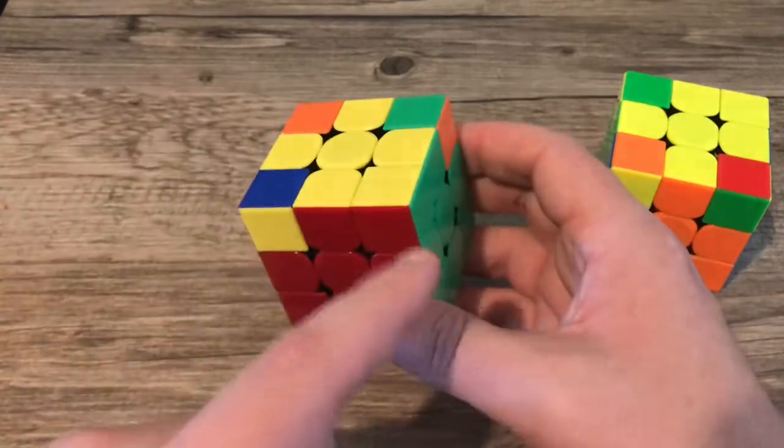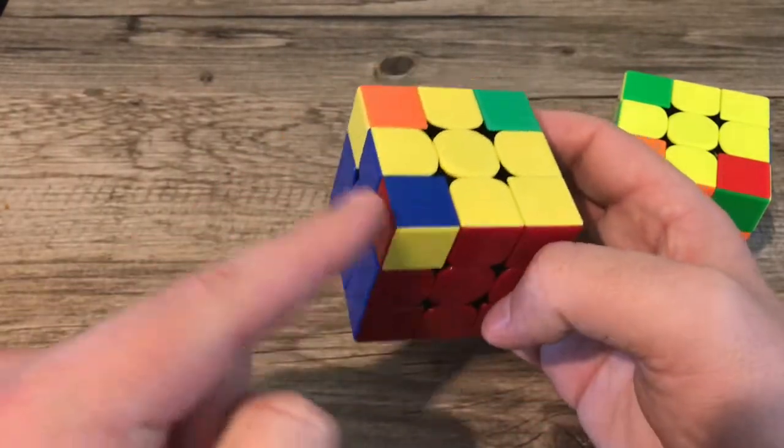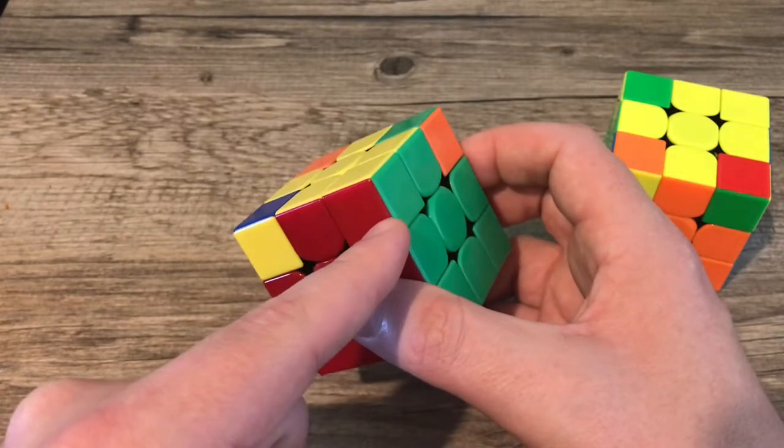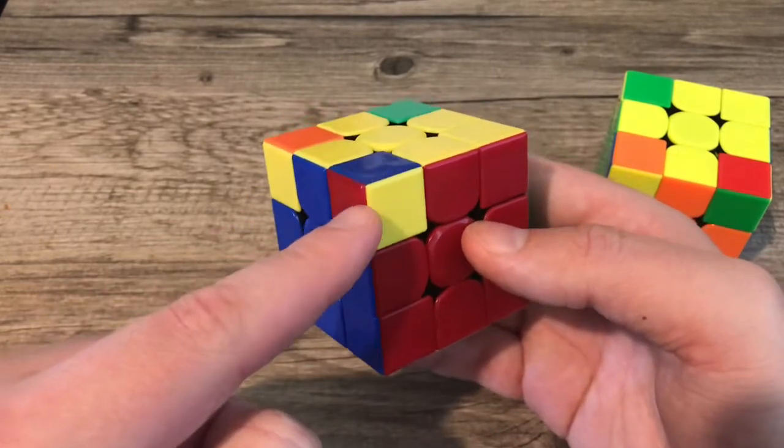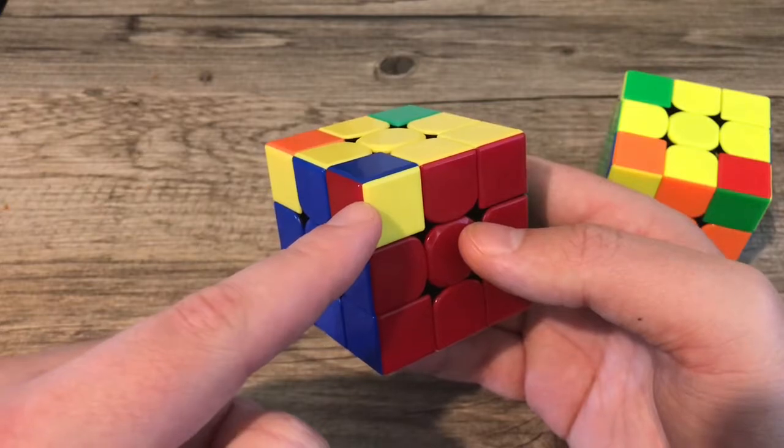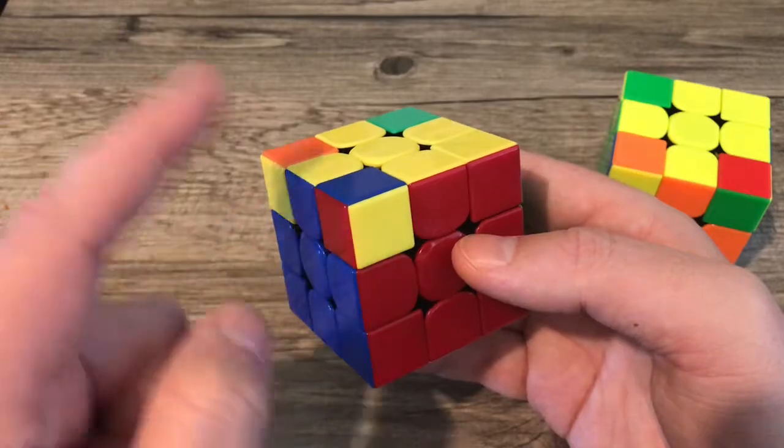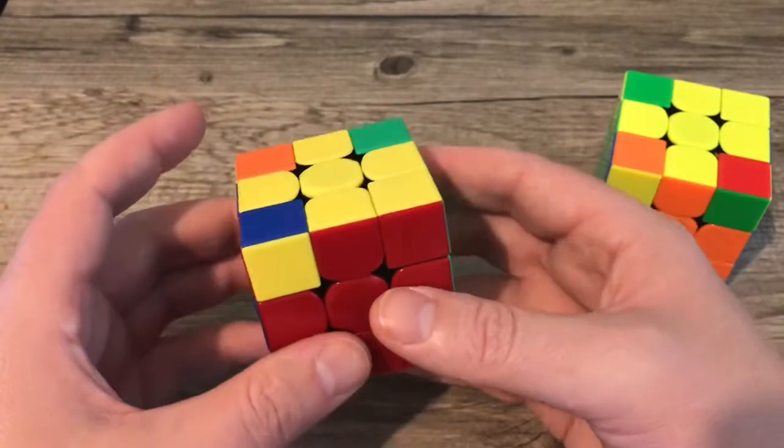The next goal is going to be putting the corners into the right position. Notice this corner is supposed to be red-green. This corner is supposed to be red-blue with a yellow. But the yellow is not on top yet. Don't worry about that just yet. We're just trying to get them into the proper position.